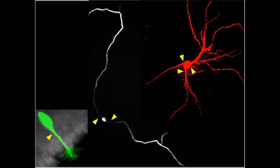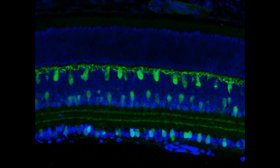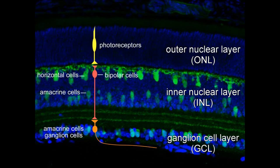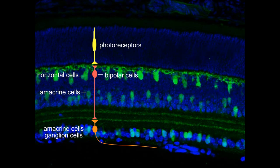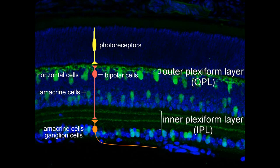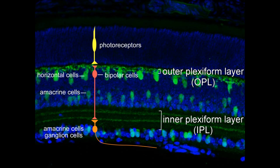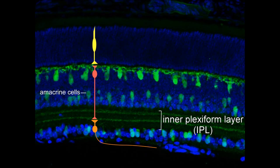To understand how neurons develop a specific number of processes, we focus on a population of neurons in the retina. Cells in the retina are organized into three nuclear layers: the outer nuclear layer, the inner nuclear layer, and the ganglion cell layer. Neurons form connections with each other that are restricted to synaptic layers called the outer plexiform layer and the inner plexiform layer. Today we'll focus on a population of inner neurons called the amacrine cells, which sit in the inner nuclear layer.